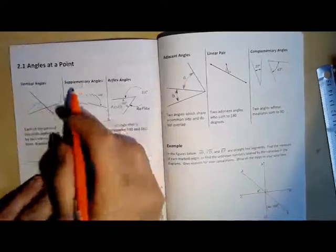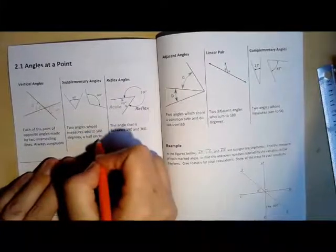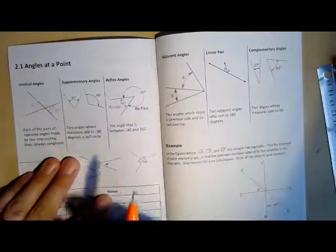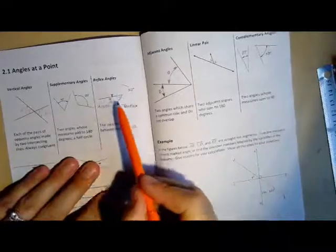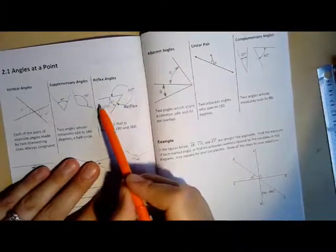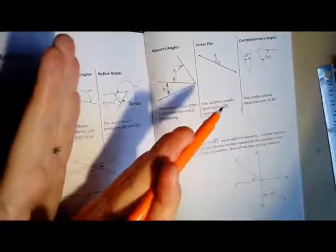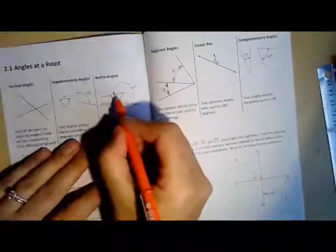Supplementary angles are two angles whose measures add to 180 degrees or half circle. A reflex angle is instead of doing the acute angle, we go around the long way because an angle is kind of like a rotation. So I can open up my hands 49 degrees or I could go around the long way 311 degrees.